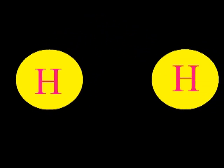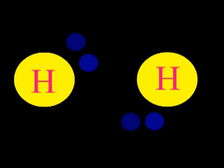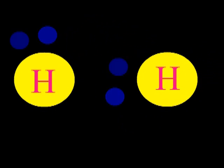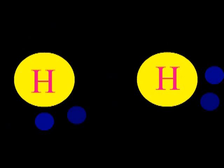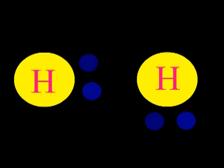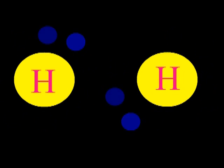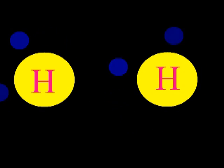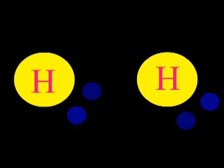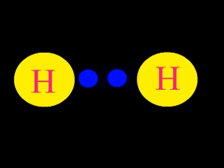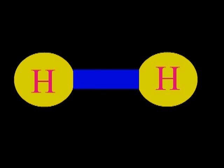Electronegativity is the attraction of an atom for an electron. More specifically, it is the relative tendency of an atom to attract electrons to itself when it is bonded to another atom.